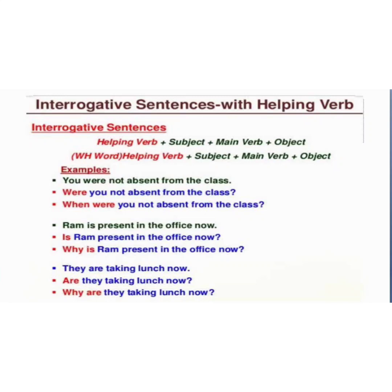The WH word comes at the start of the sentence. For example: 'Ram is present in the office now.' becomes 'Is Ram present in the office now?' or 'Why is Ram present in the office now?' Similarly, 'They are taking lunch now.' becomes 'Are they taking lunch now?' or 'Why are they taking lunch now?' When a WH word is used, it comes first and the remaining structure stays the same.